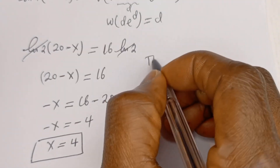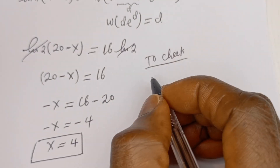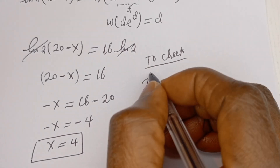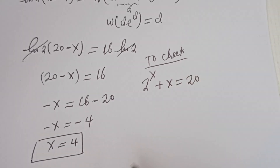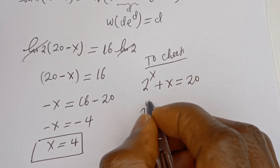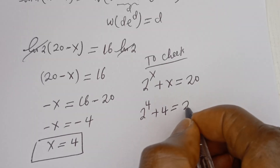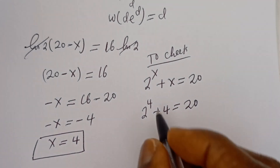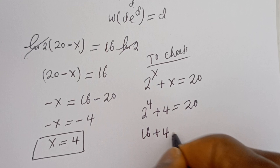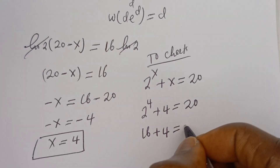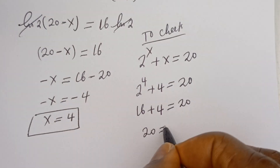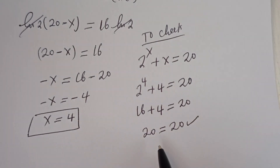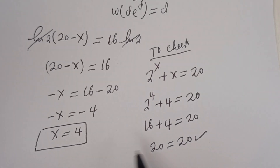To check: we have the given equation 2 to the power of x plus x equals 20. When x equals 4, we have 2 to the power of 4 plus 4 equals 20. Since 2 to the power of 4 is 16, and 16 plus 4 equals 20, which is true. I hope you enjoyed the video. Thank you for watching. Please don't forget to like, share, comment, and subscribe to my channel. Bye.